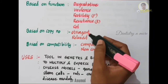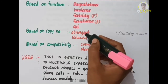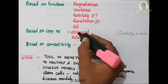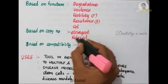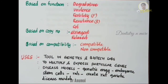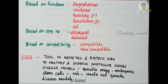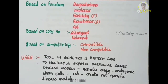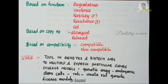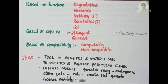The next classification is based on copy number. There are two types: stringent plasmids and relaxed plasmids. Stringent plasmids replicate only along with the main bacterial chromosome and are present as a single copy or at most several copies per cell. Relaxed plasmids replicate independently of chromosomal DNA replication, so multiple copies of plasmids are present.